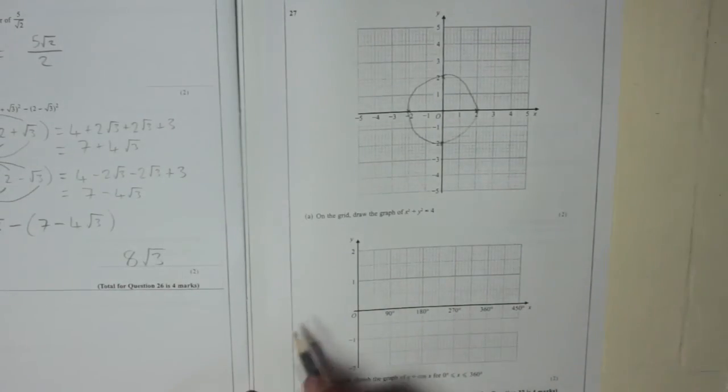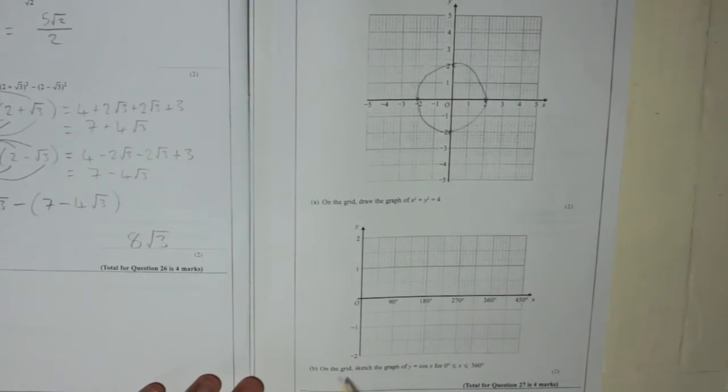Next question. B. On the grid, sketch the graph of y equals cos x for 0 degrees less than or equal to x, which is less than or equal to 360. So basically, on the x-axis here, it's in degrees. It wants us to sketch it from 0 to 360.